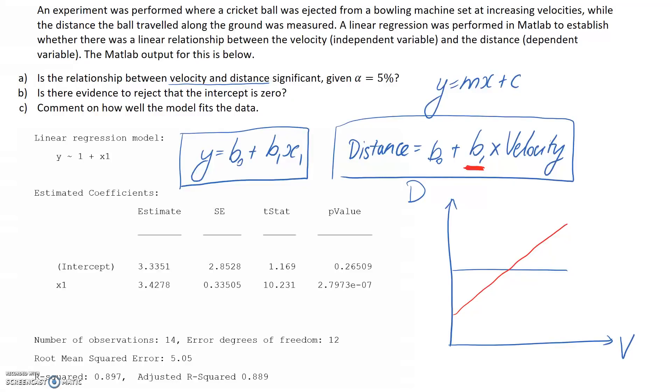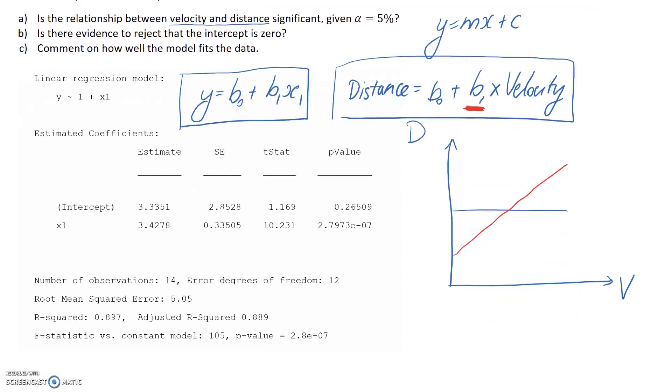So MATLAB does this test for us. This is kind of what this t-stat is. It's a test statistic that it gets out, and it ends up returning a p-value. So in order to interpret this, we need to know what our null hypothesis and our alternate hypotheses are. So I'm going to pop it down here. So this is for part A.